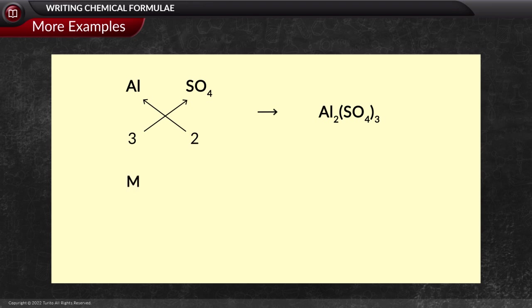Similarly, for Mg and carbonate, the valency for both is 2. They are divisible, and thus, on the criss-cross, the formula obtained is MgCO3.